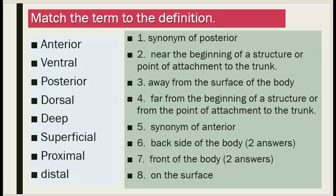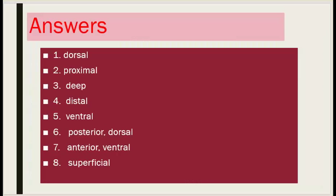Number six: back side of the body — this can have two answers. Number seven: front of the body — this also can have two answers. Number eight: on the surface. Answers. Number one is dorsal. Number two is proximal. Number three is deep. Number four is distal. Number five is ventral. Number six: posterior, dorsal. Number seven: anterior, ventral. Number eight: superficial.